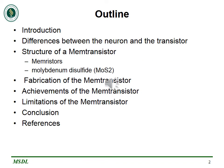Here is an outline of what we'll be discussing today. First, we'll cover the introduction. Next, we'll look at the differences between the neuron and the transistor. Then, we'll examine the structure of a memtransistor, which includes memristors and a material used to manufacture memtransistors known as molybdenum disulfide. After that, we'll look at the fabrication of the memtransistor, the achievements and advantages, the limitations, and finally a conclusion summarizing everything discussed.